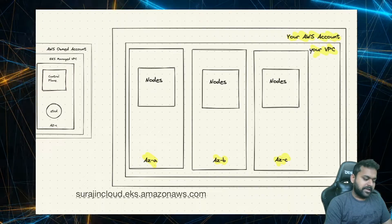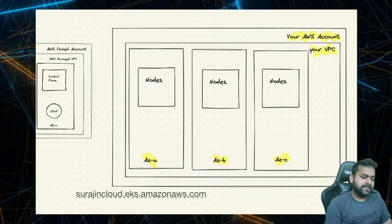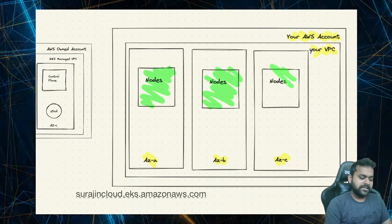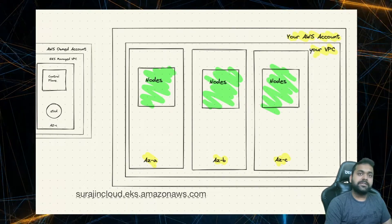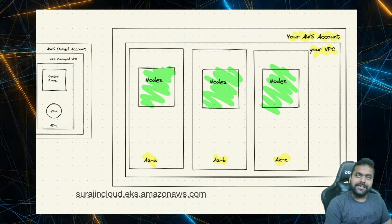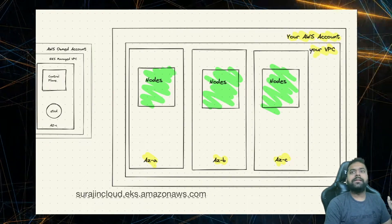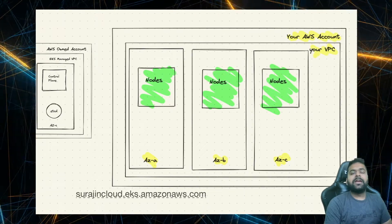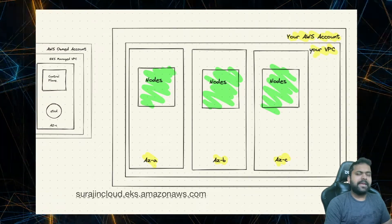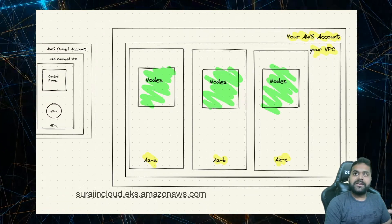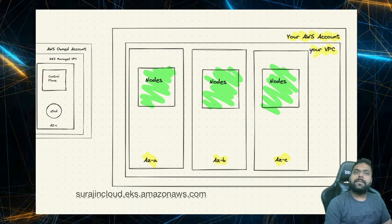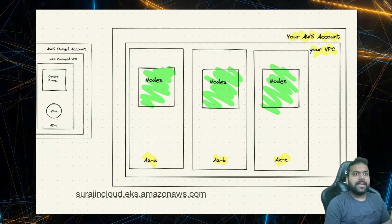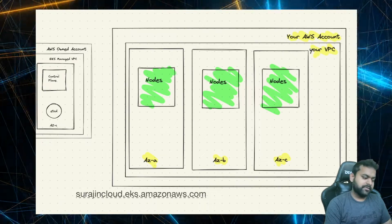Going back to the data plane: in your defined VPC and availability zones, you will have these nodes, which are nothing but EC2 machines. On these nodes, as soon as you spin up the data plane alongside your control plane, it will have kube-proxy running on them. And CoreDNS, which is a service discovery mechanism inside Kubernetes, will be running on these nodes. These two services can be managed with the help of EKS add-ons, which we will see later.